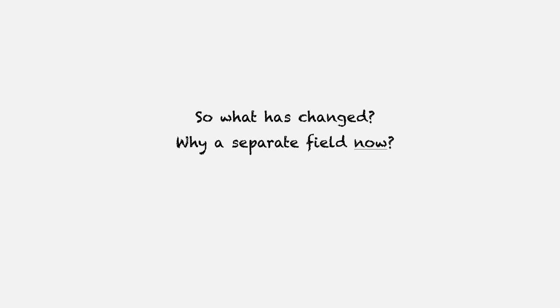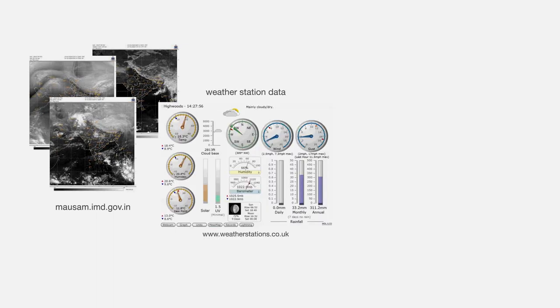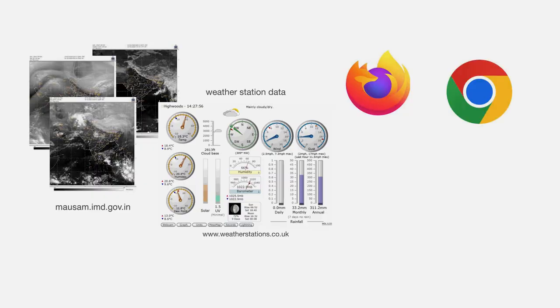So what has changed now? Why do we have this as a separate field? I think it is because of two reasons. First is the tremendous rise in data — there are lots and lots of observations now. For example, satellites capture Earth images every second, weather stations record real-time temperature, humidity, and rainfall across the world, and our web history is also being stored and often shared with companies, whether you like it or not. These videos on YouTube — which is presumably where you're watching this — all this is data.